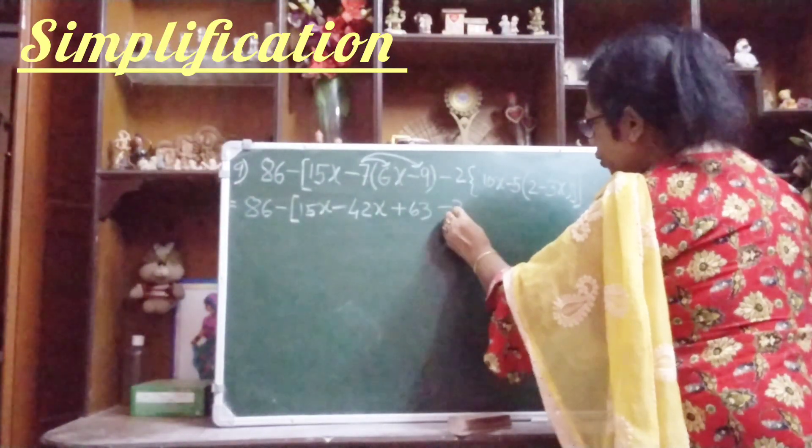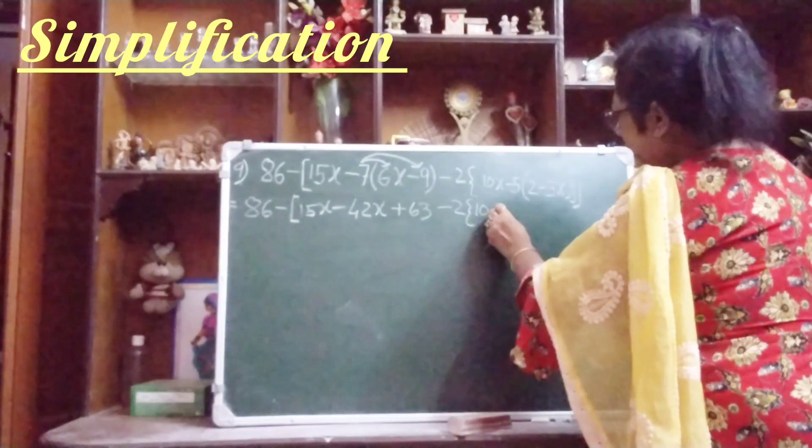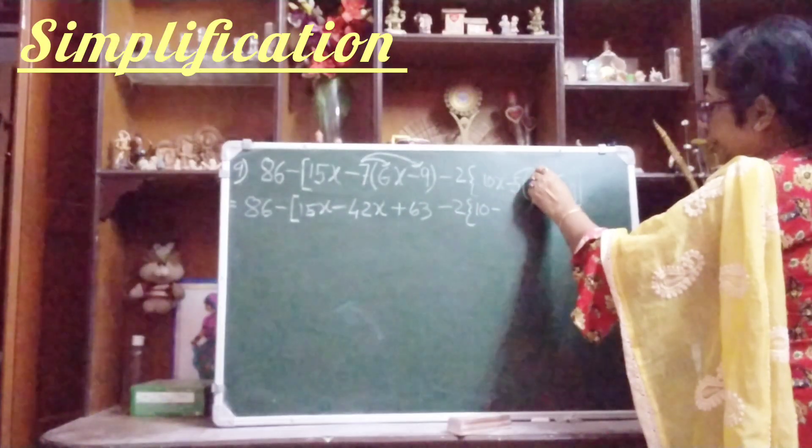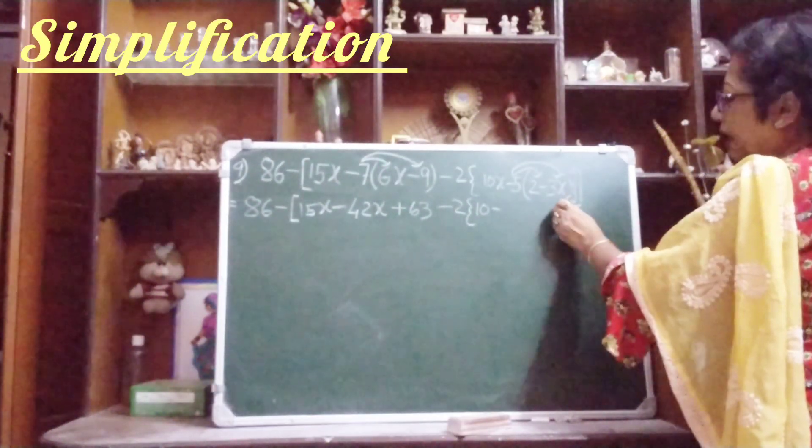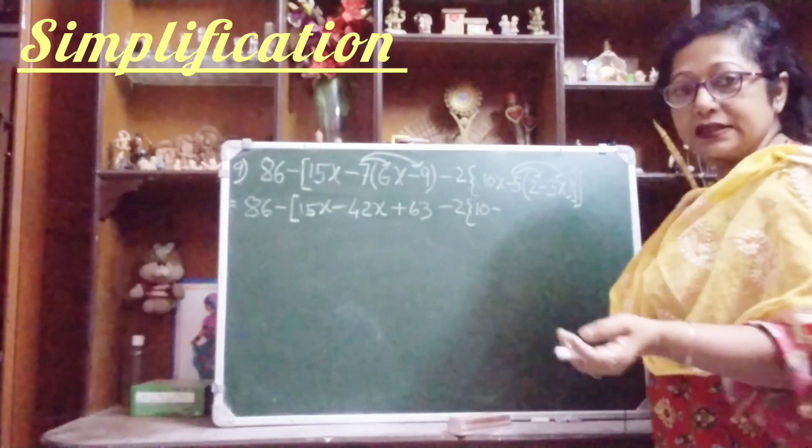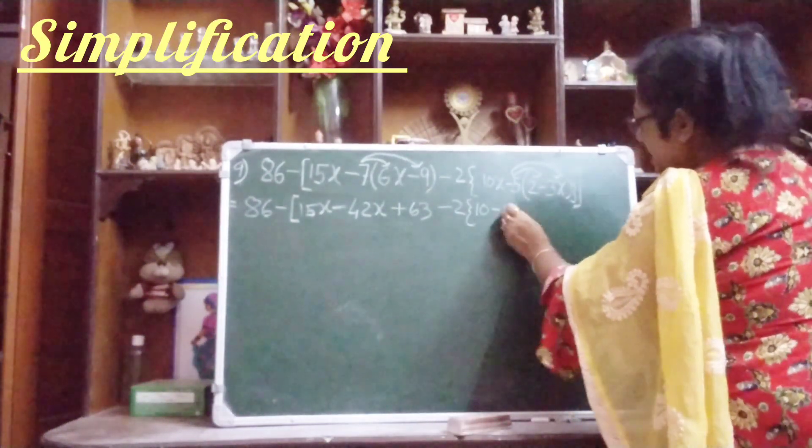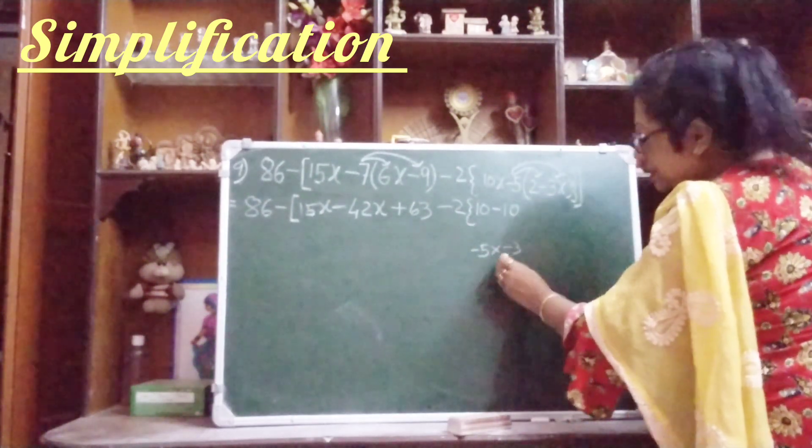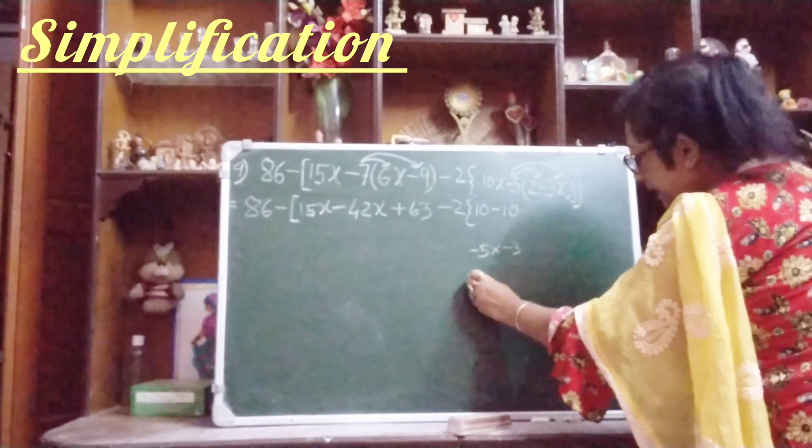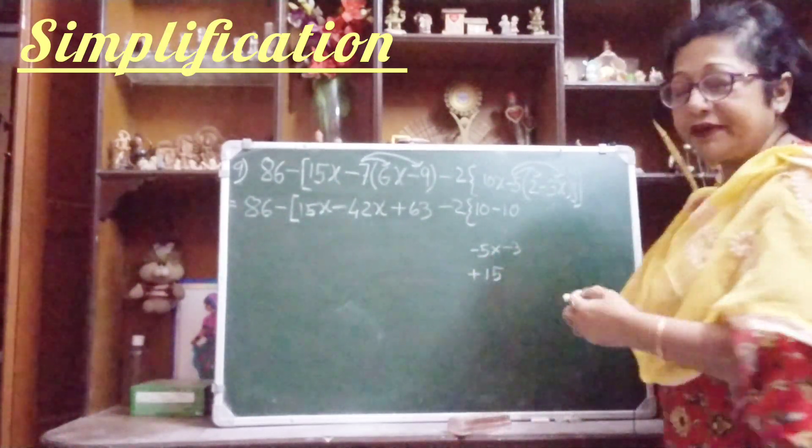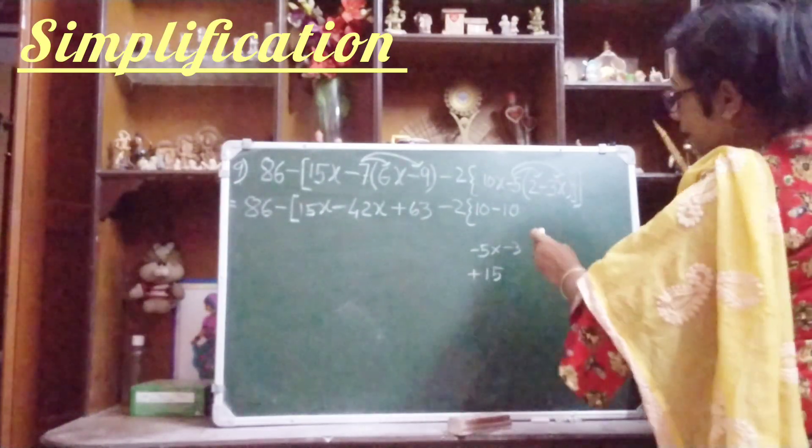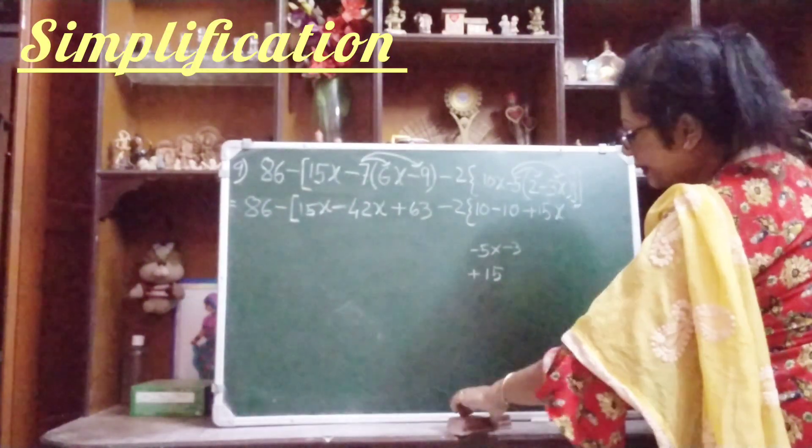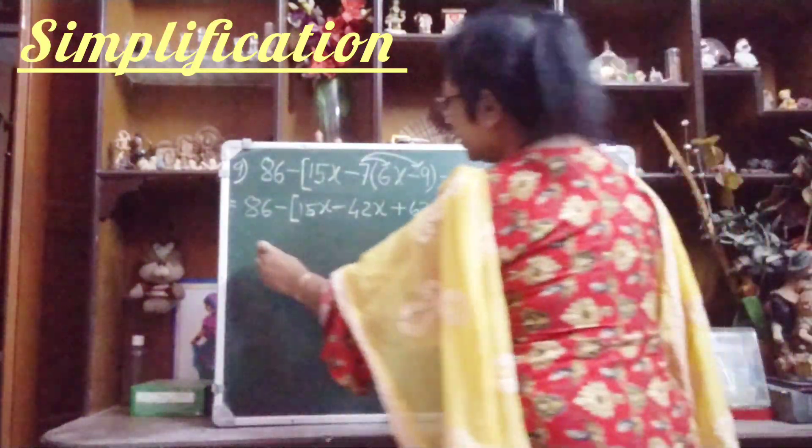Now minus 2, our curly bracket, 10x. Again here, minus 5 we will multiply with these two terms, minus 5 with 2 and minus 5 with minus 3x. So minus 5 into 2, 5 times 2 is 10, so minus 10. Minus 5 into minus 3, what will come children? 5 times 3 is 15 and minus minus plus, so plus 15x. This much I hope all of you understood.